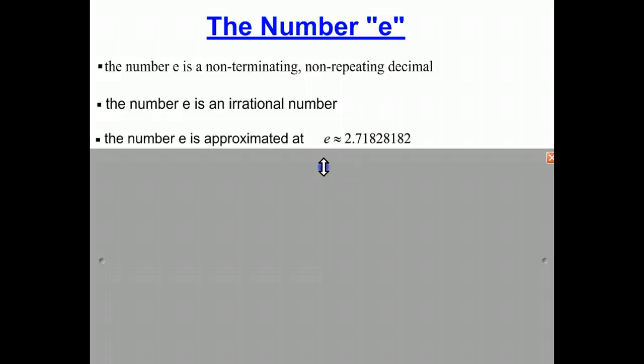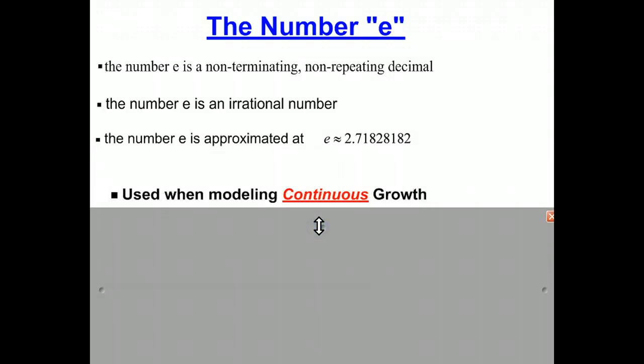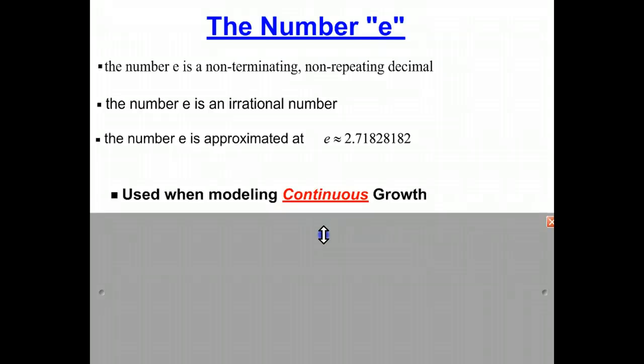Now, where is e used? E is used when we're modeling continuous growth. When you have something that is growing continuously, growing so frequently that you can't describe the time intervals for how fast it's growing, this is when we use the number e.